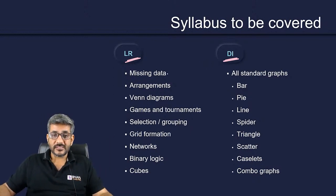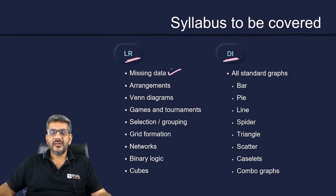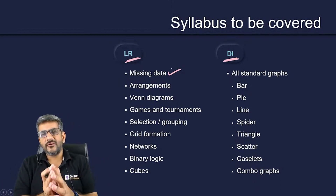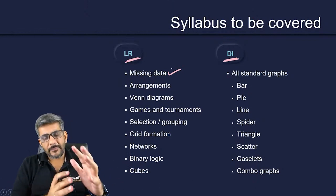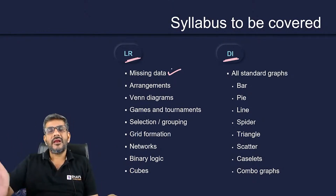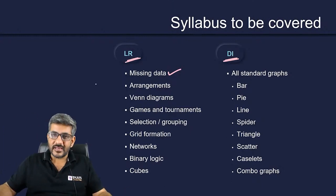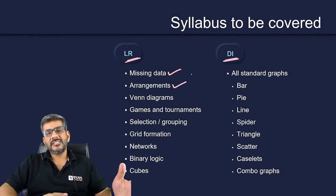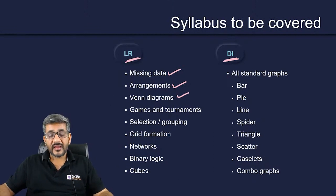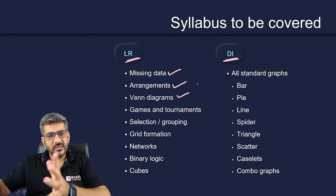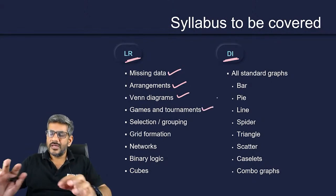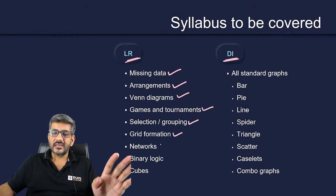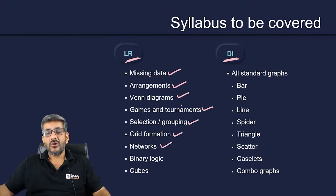Apart from the question types you see on the screen, missing data sets have also been asked a lot in the LRDI section. But when I talk about missing data, does it have any special formulas? Of course not. It is just a separate type based on reasoning. Arrangements have some rules required, but still 20% is rules and 80% is reasoning. Venn diagrams: 30-35% rules, remaining is reasoning. Games and tournaments: 20-25% rules, rest is reasoning. Selection and grouping — all reasoning. Grid formation — all reasoning. Networks — all reasoning. So most LRDI types are predominantly about reasoning.